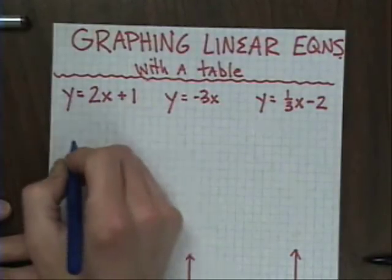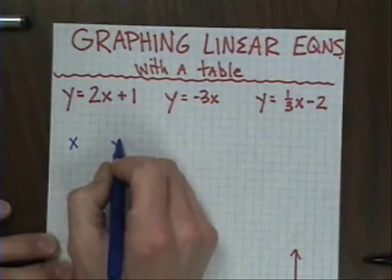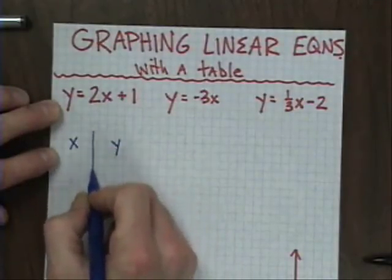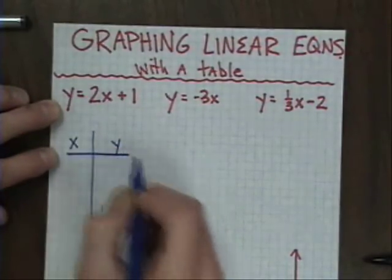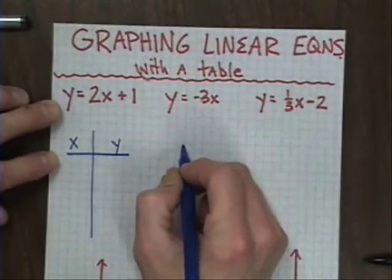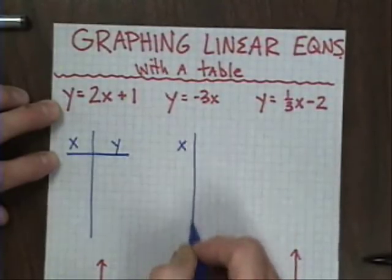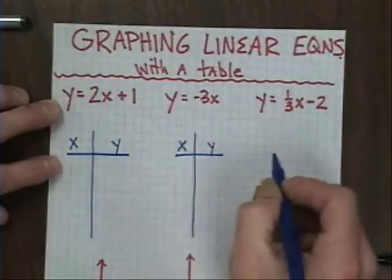Since I have two variables, an x and a y, I'm going to choose my x value and my y value. Draw a line down the center. And for each one of these, I'm going to set up an x and a y value with a line down the center.